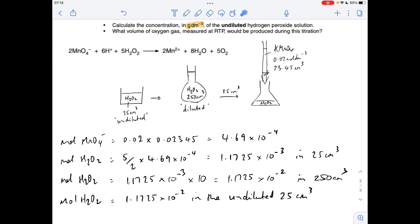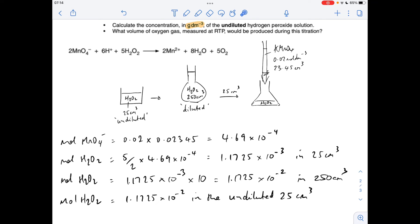So the next part is where I think the question's a little bit awkward, because normally we would calculate a concentration in moles per decimeter cubed, whereas this question wants it in grams per decimeter cubed. So the way I'm going to do this, I'm going to work out the concentration in moles per decimeter cubed.